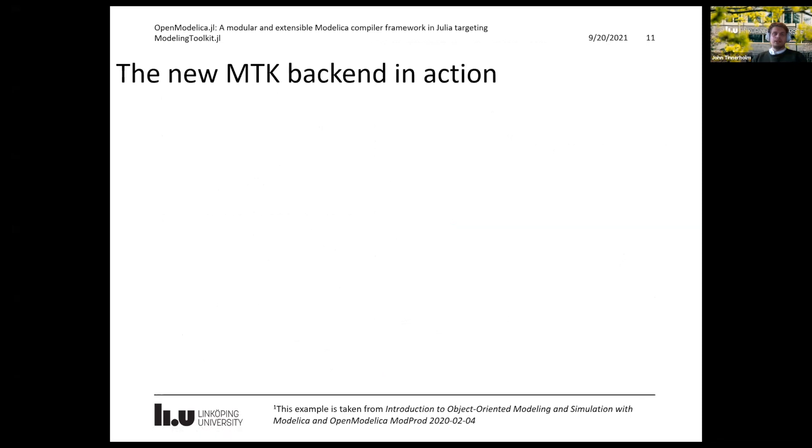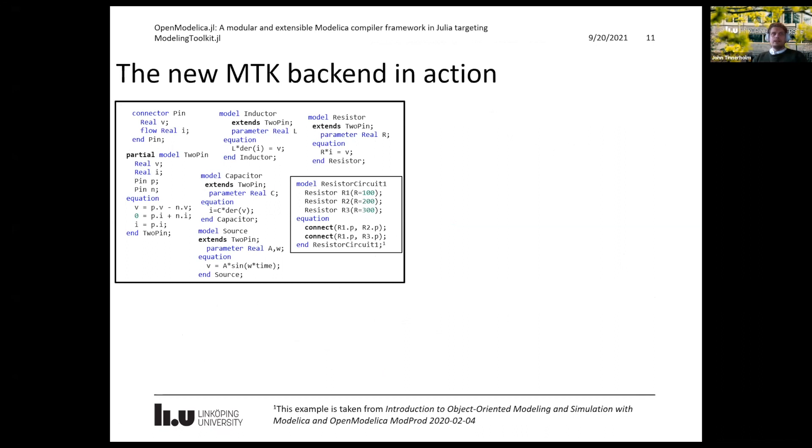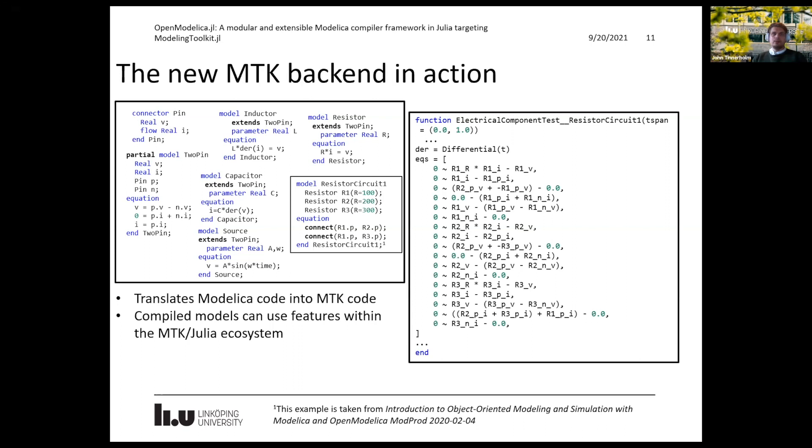So the new backend in action. To the left here, we can see a selection of different electrical components. And from this, we can use the frontend to translate the MTK code. So what we first do is that we translate the code here to the left into flat Modelica, and we then feed it into the backend. And back, we get a system in ModelingToolkit mode, but now representing the equations in ModelingToolkit instead of in Modelica. So we can handle stuff like inheritance, connection, partial, and so on.